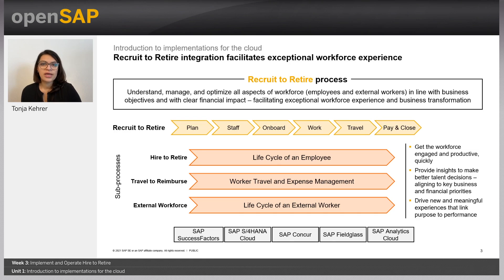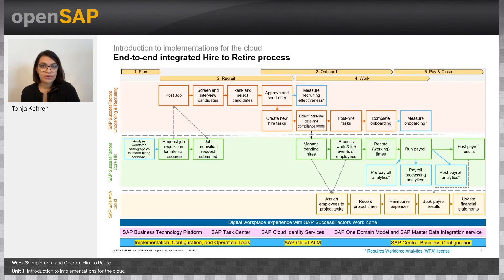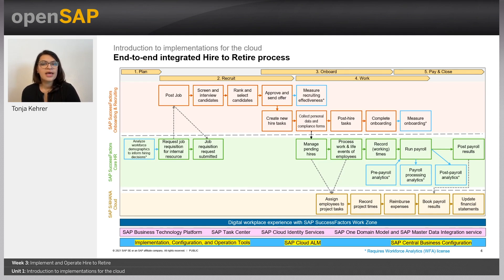The Hire to Retire business process covers all phases from planning through payment and closing, spanning SAP SuccessFactors and SAP S/4HANA. So far you have learned about the strategy and innovations for the Recruit to Retire scenario, people analytics for Hire to Retire, Time and Attendance Management with SAP SuccessFactors, SAP Master Data Integration together with Employee Central Payroll, and Cost Center Integration. This unit focuses on the methods and tools SAP provides to support implementing, configuring, and operating the Hire to Retire sub-process.